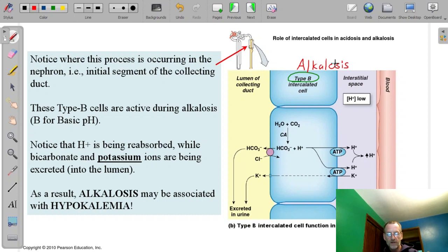Again, we're in the same place on the collecting duct, the initial segment. And these are type B cells, and you might think B for base. Basic pH. It's alkaline. We have alkalosis. And now it's just the opposite.